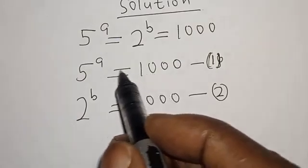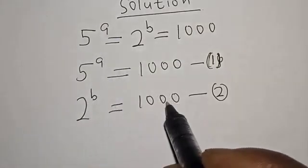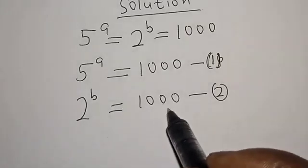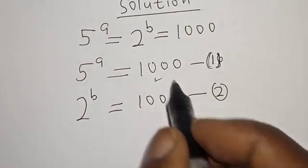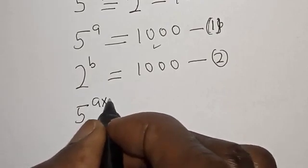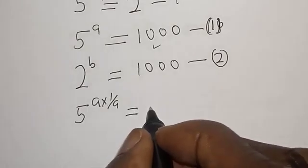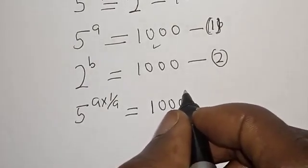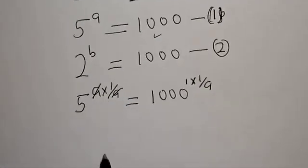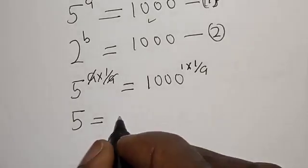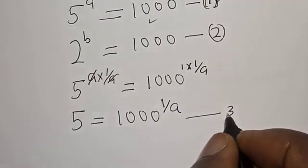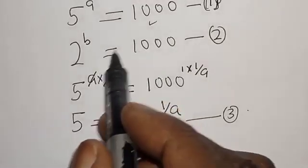We multiply the exponent of both sides from equation 1 by 1 divided by a. Starting with equation 1: 5 raised to power a, multiplied by 1 divided by a, is equal to 1000 raised to power 1 divided by a. This gives us 5 is equal to 1000 raised to power 1 divided by a. Let's call this equation 3.